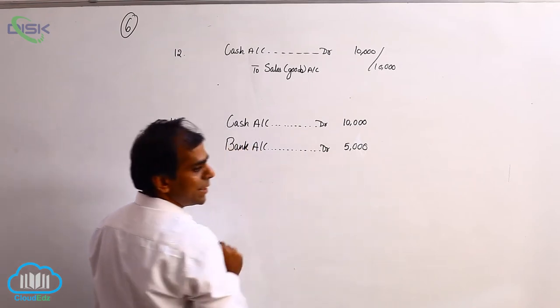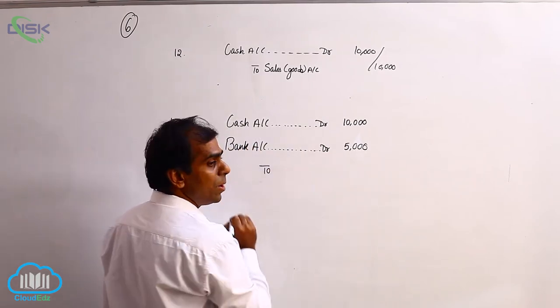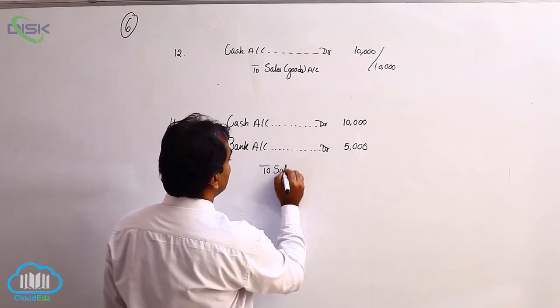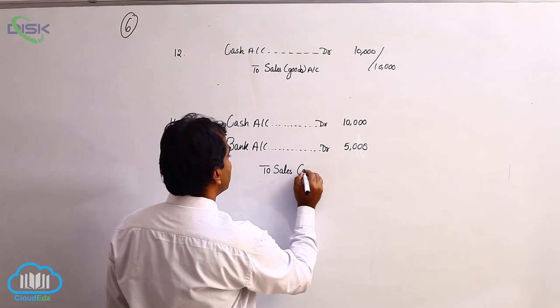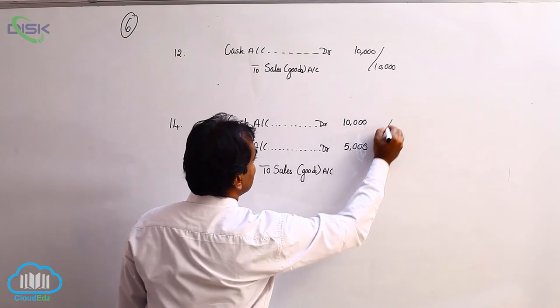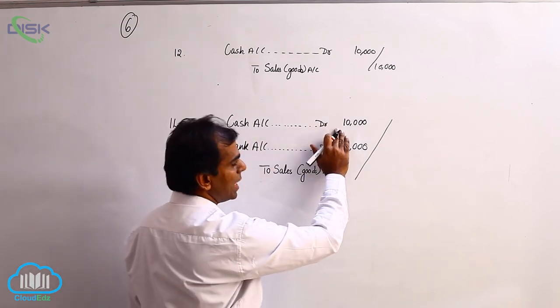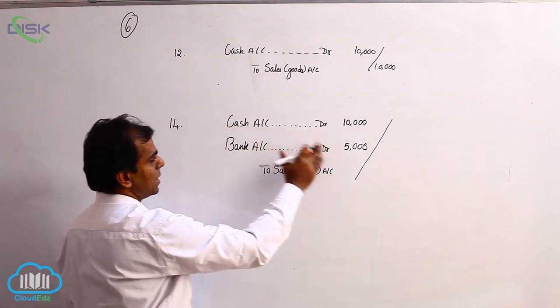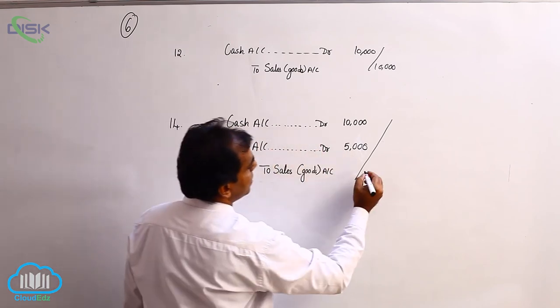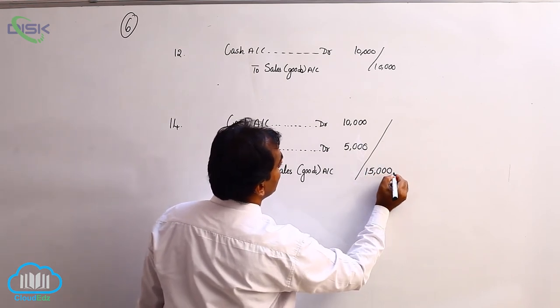So we debit 5,000 to the bank account. Goods are going out - goods are real account, so we credit a real account when it goes out. We represent goods with the word sales. This becomes a compound journal entry, where in debit you have 10,000 in cash and 5,000 in check, which together contribute to your total sale of 15,000.